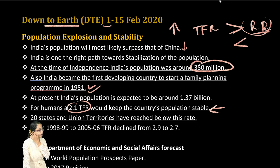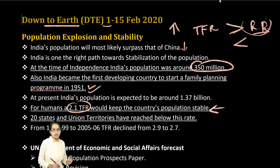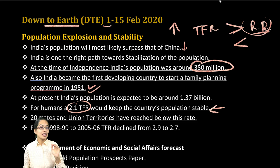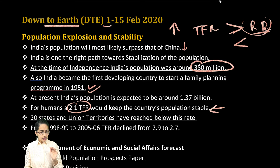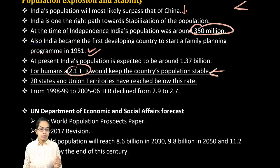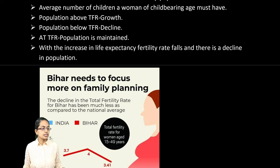Twenty of the states and union territories in India have reached below this level. But you still have states like Bihar where the total fertility rate is extremely high, as you can see in this picture.